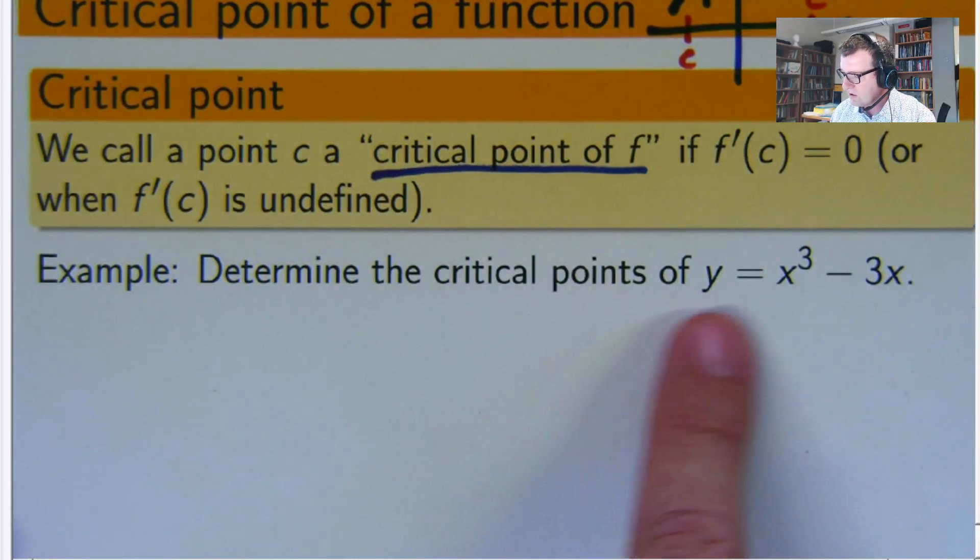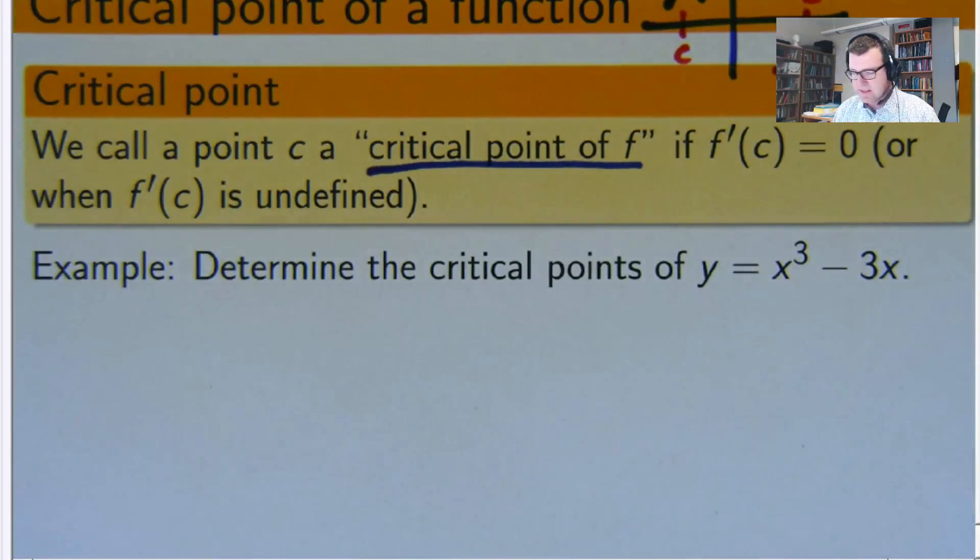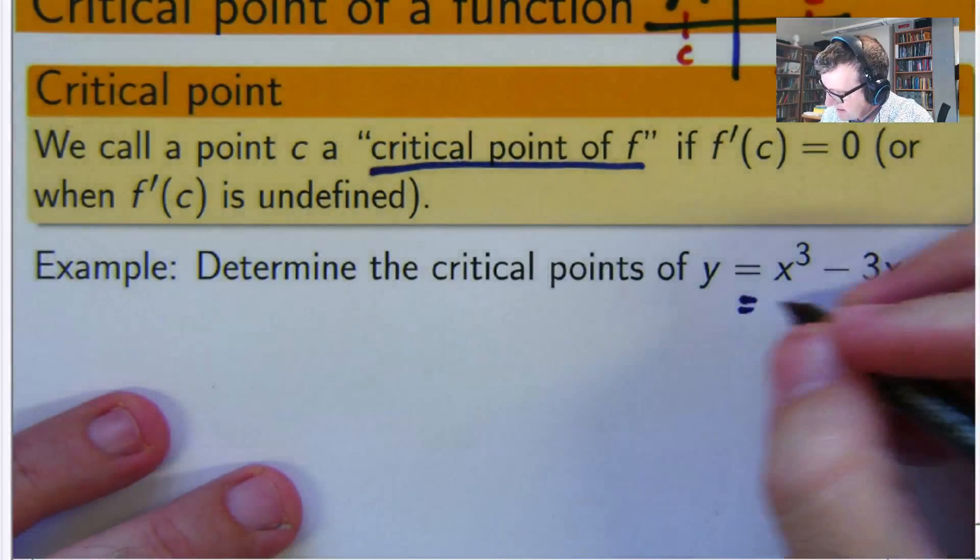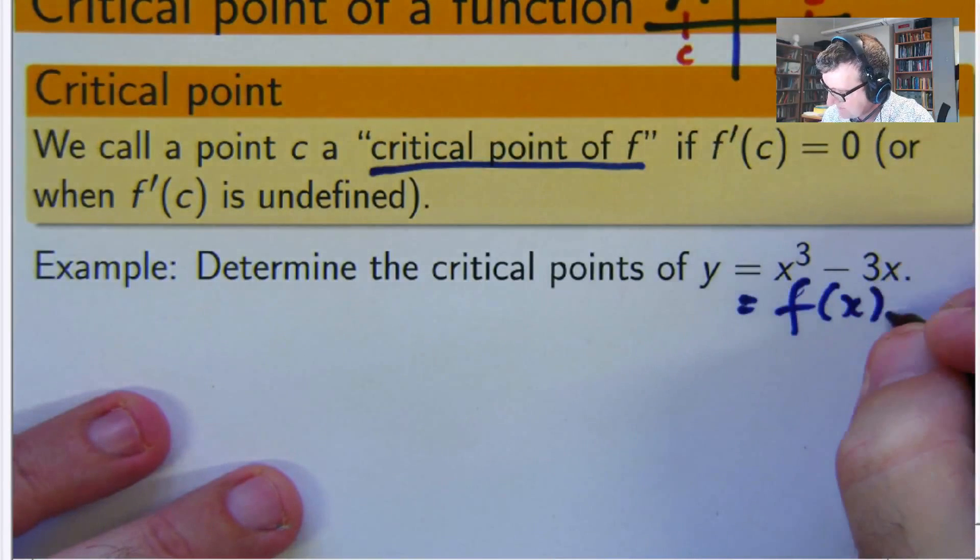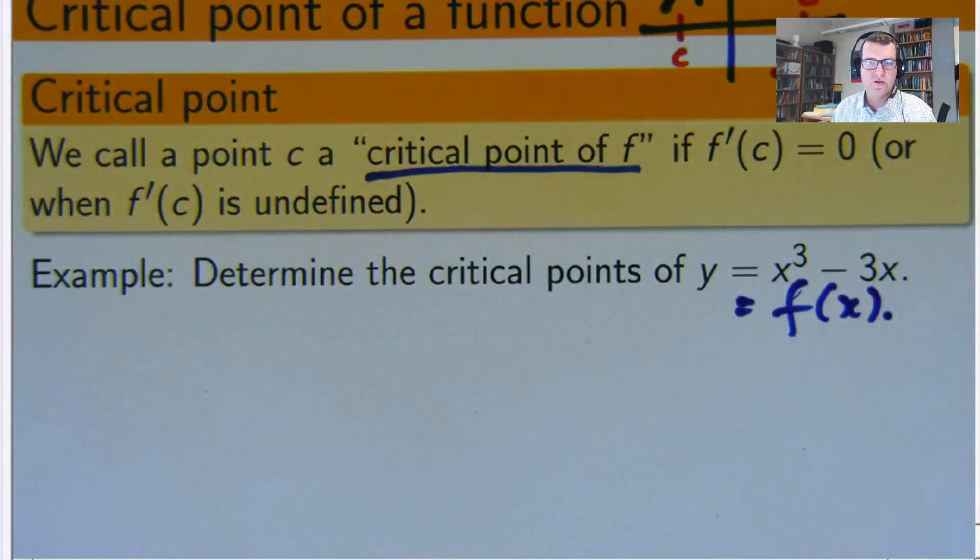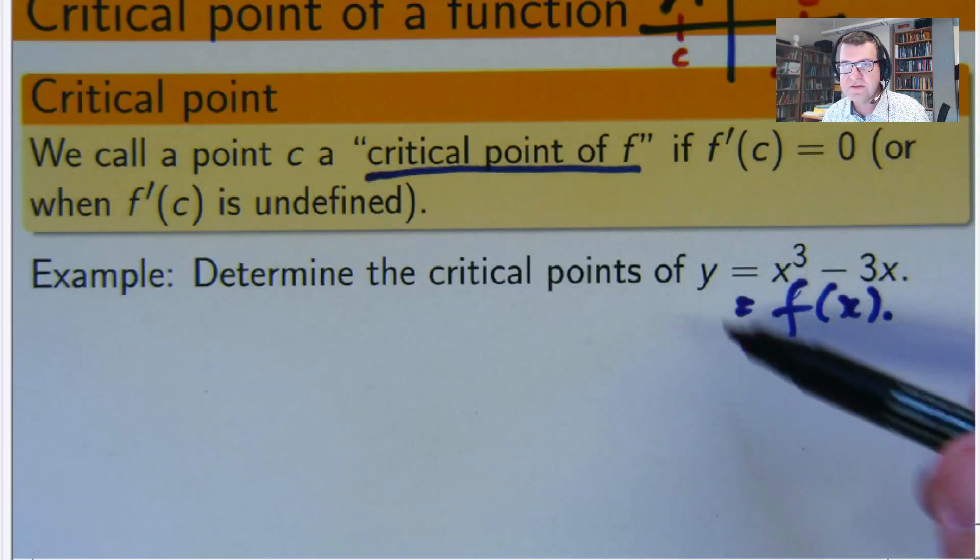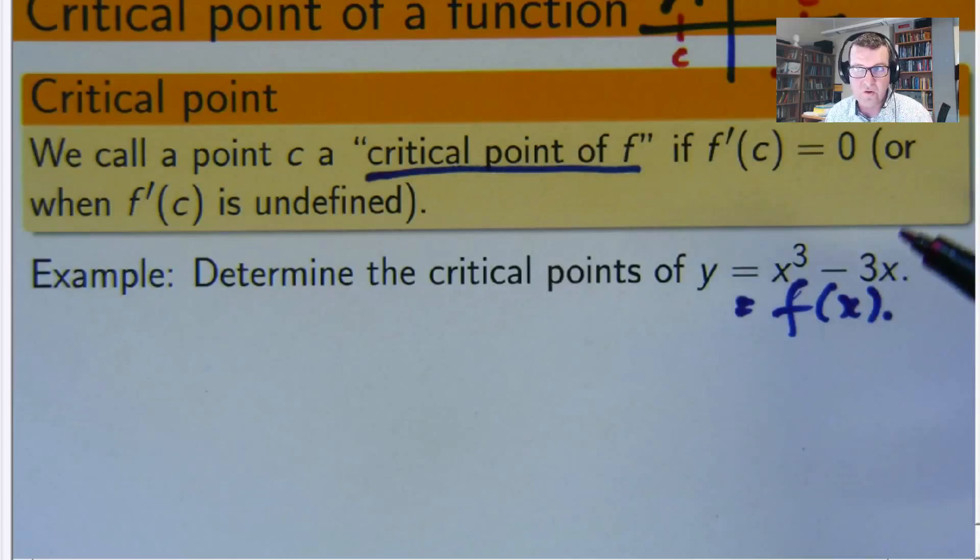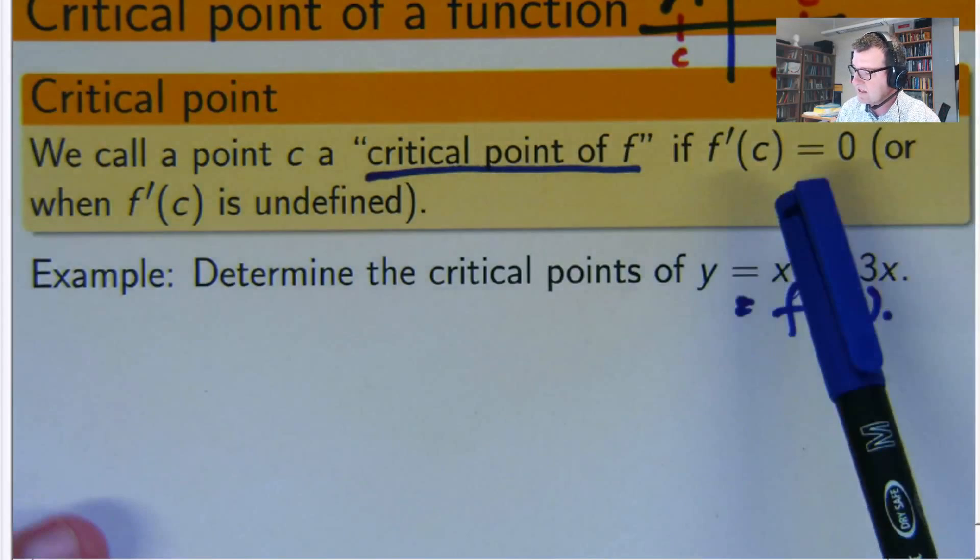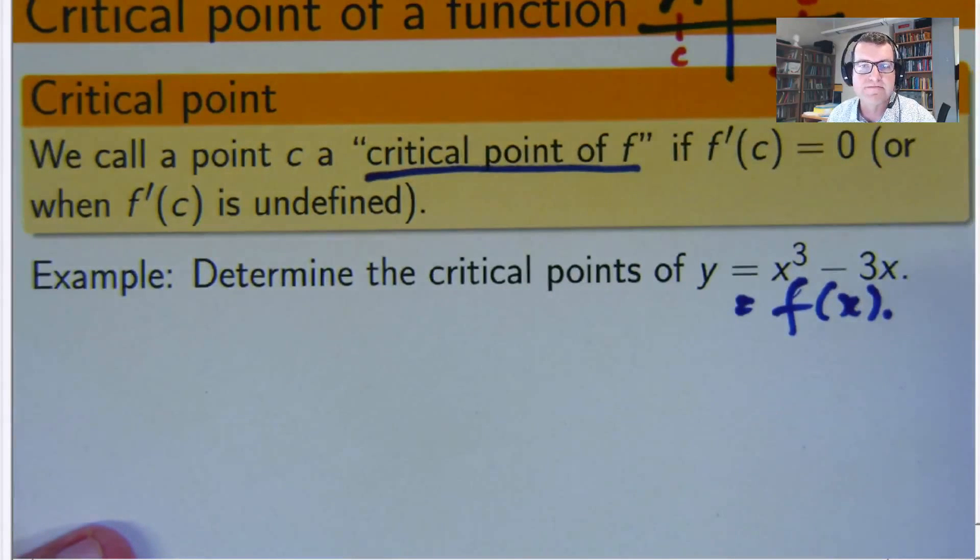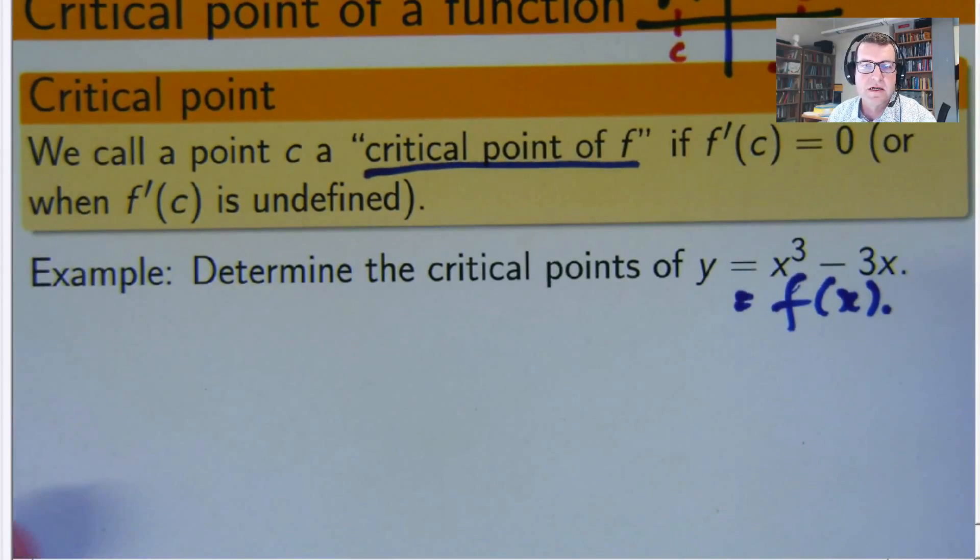Determine the critical points of this function here. So this is our f of x. We want to find, firstly, the derivative of this function and set it equal to 0 and solve. So we're essentially forming this equation and solving it. So let's do it.